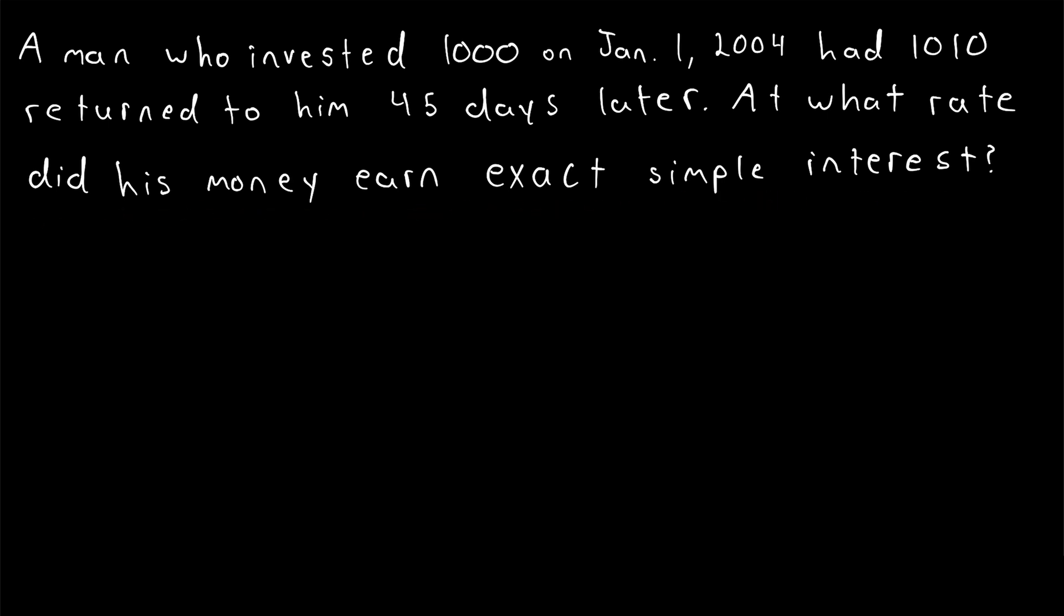To solve this problem, we just have to use our familiar simple interest formula and solve for the simple interest rate. We know that the total amount, the principal plus interest, is what the man received at the end of the period. So, 1,010 that was returned to him 45 days after his investment.